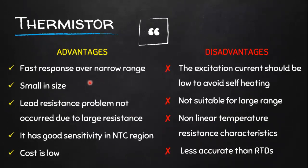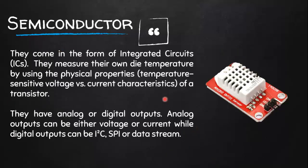We can find the resistance of a thermistor by using an ADC component like a microcontroller. The advantages of thermistors include a very fast response over a narrow range of temperature, small size, and the lead resistance is not a problem because thermistors have a very high resistance value. They have good sensitivity in the NTC region and their cost is low compared to RTDs and thermocouples. The disadvantages include that excitation current should be low to avoid self-heating, they are not suitable for large temperature ranges, their behavior is nonlinear with temperature changes, and they are less accurate compared to RTDs.